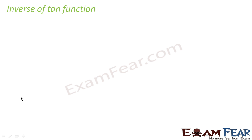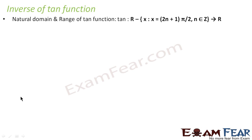Now let's do tan inverse. For the tan function, the natural domain is any real number but not (2n+1)π/2, because tan equals sine divided by cosine, and cosine becomes zero at those values, making tan infinite. So the domain is any real number minus (2n+1)π/2, and the range is any real number — tan can take any real number.